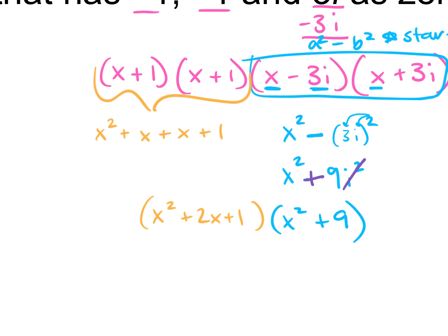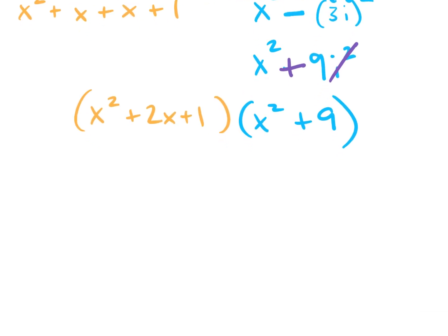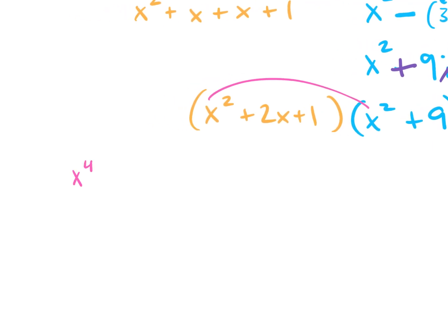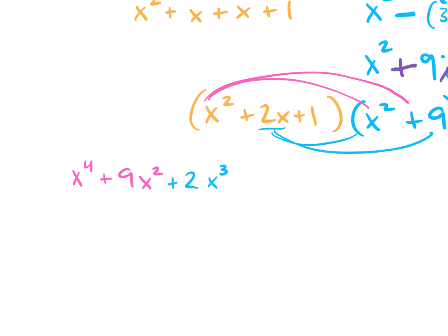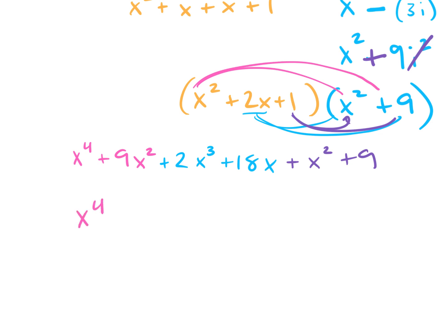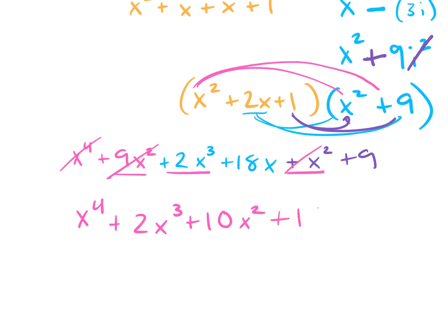Next step, I'm going to FOIL x squared plus 2x plus 1 with x squared plus 9. Make sure everything in the first set gets multiplied to everything in the second set. x squared times x squared is x to the 4th power. x squared times 9 is 9x squared. 2x times x squared is 2x to the 3rd power. 2x times 9 is 18x. 1 times x squared is x squared. 1 times 9 is 9. Combining like terms: x to the 4th, plus 2x cubed, plus 10x squared, plus 18x, plus 9.